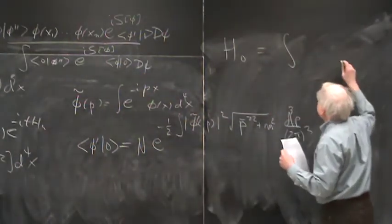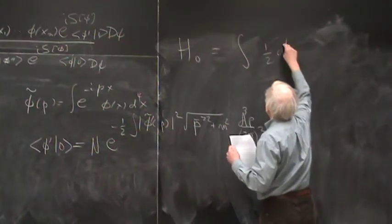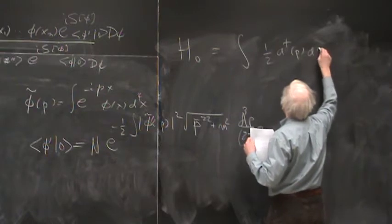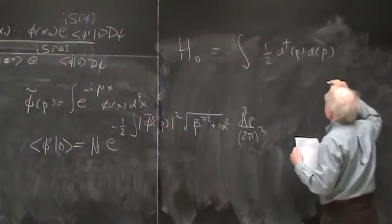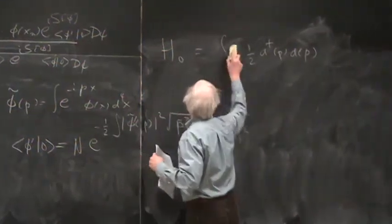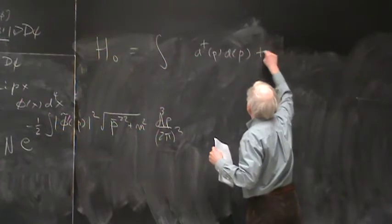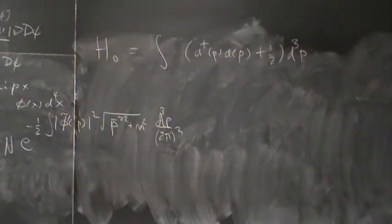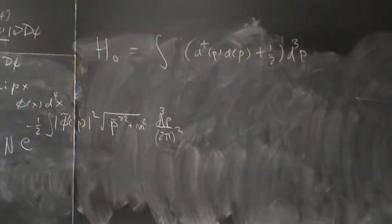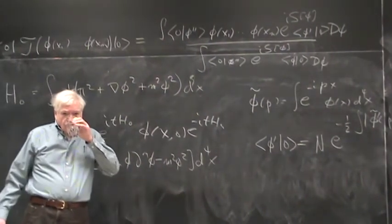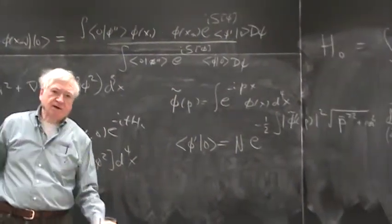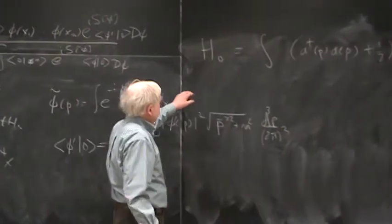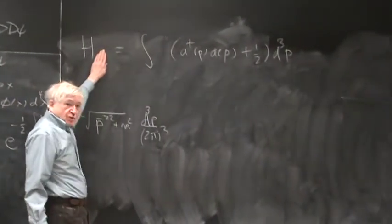H0, for example, is just simply the integral of a-dagger of p, a of p — actually, a half a-dagger a. For an arbitrary potential, we wouldn't know the eigenstates. The potential is just m squared phi squared at this point. But for an arbitrary potential, we wouldn't know the eigenstates of the problem.